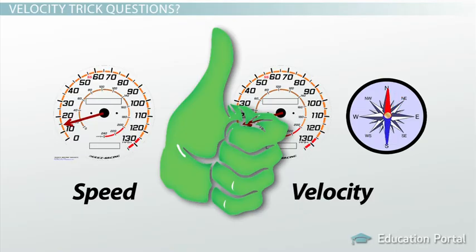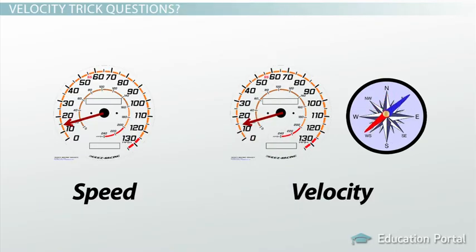Walk in a circle, making sure you walk the same speed the entire time. Since you're constantly changing direction, your velocity is changing even though your speed is not. A constant velocity requires both a constant speed and an unchanging direction.